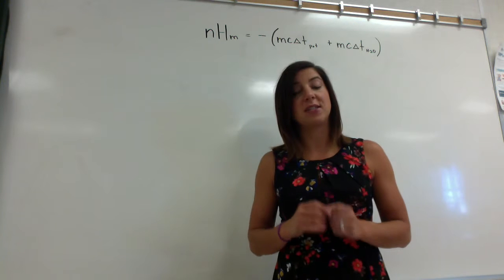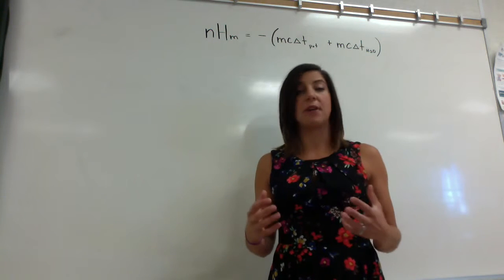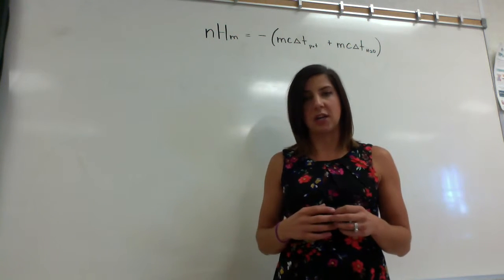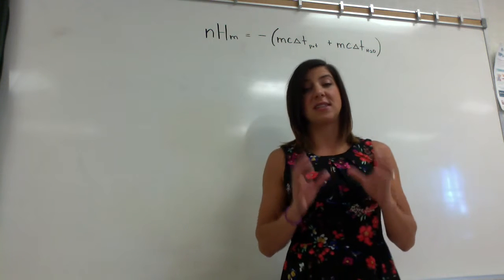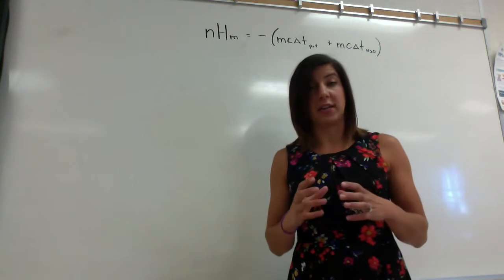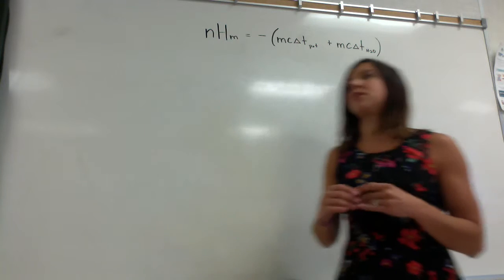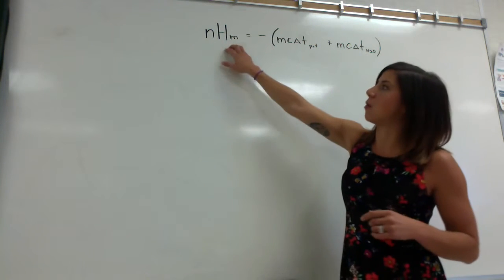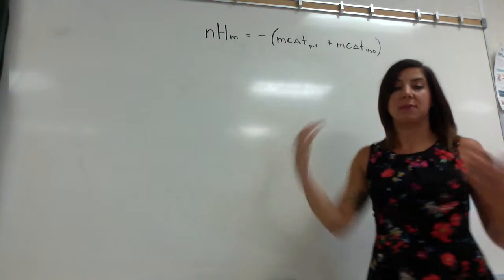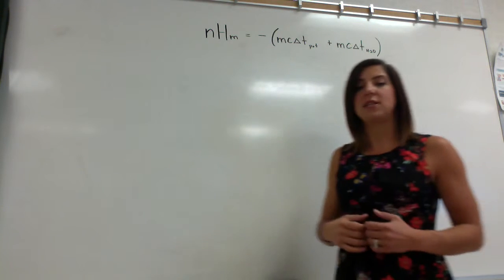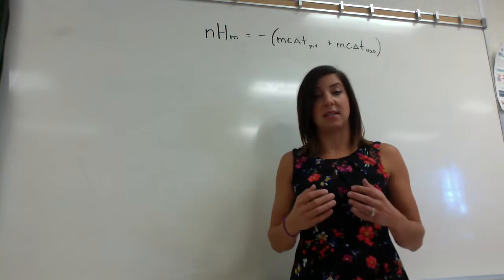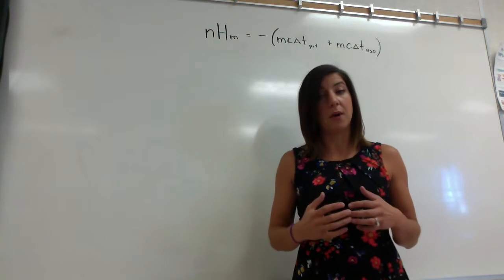For that reason, we can still use our simple everyday reactions to figure out the enthalpy of our chemical reaction. We just have to slightly alter the chemical formula for the calorimetry calculations. So instead of just being NHM — moles multiplied by the molar enthalpy equals MC delta T of the water — we have to take into account the differences in the heat capacities of all the materials being heated up.